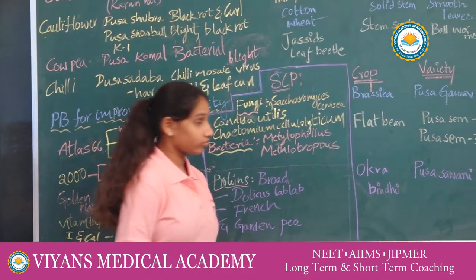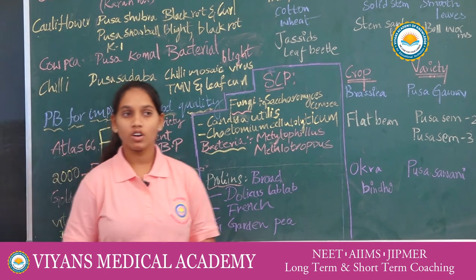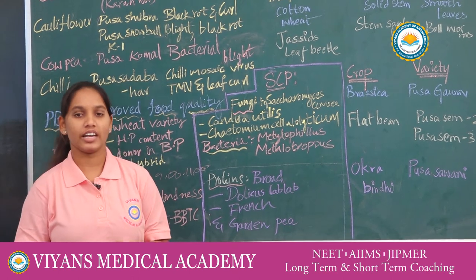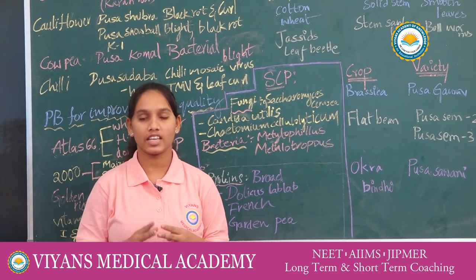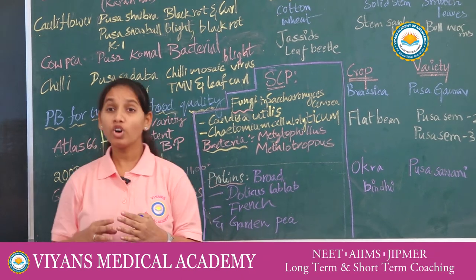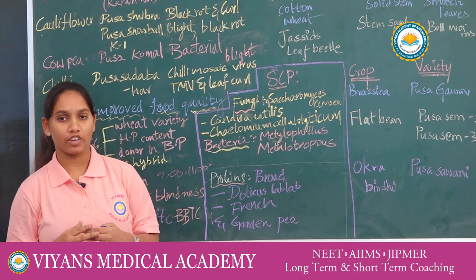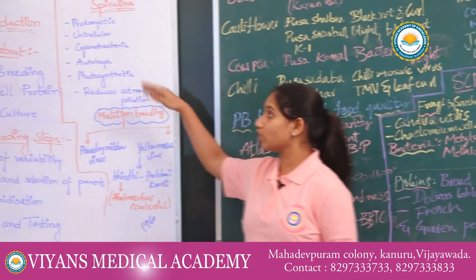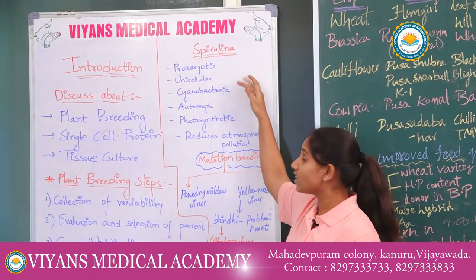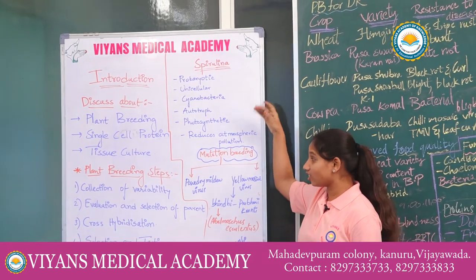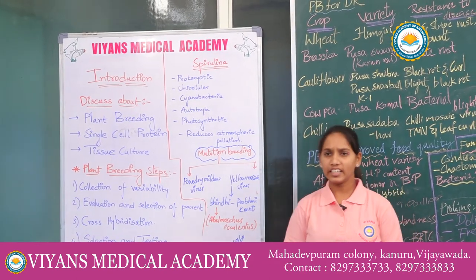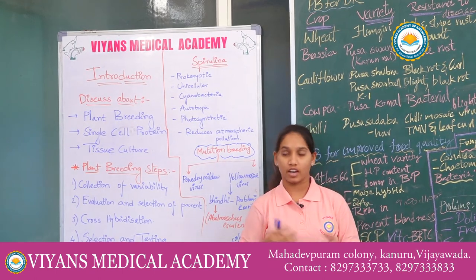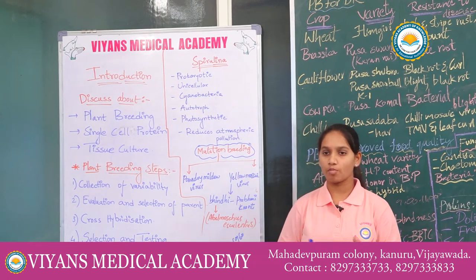Now coming to single cell proteins. Single cell proteins include organisms like Spirulina. To produce 1 kg of meat, at least 3 to 10 kg of grains are required. More than 25% of humans suffer from protein malnutrition. Spirulina is a prokaryotic, unicellular cyanobacterium — it is autotrophic, photosynthetic, and reduces atmospheric pollution. It is grown in sewage water, waste water, and organic manure, and is rich in proteins, vitamins, minerals, and carbohydrates.